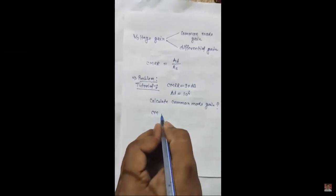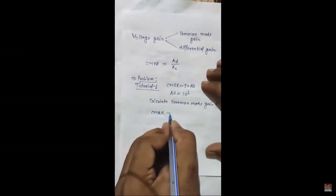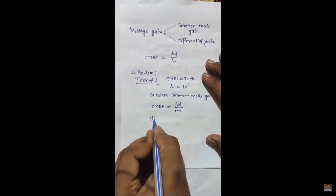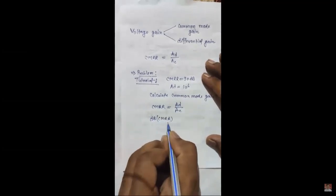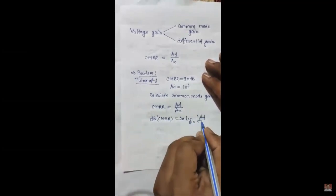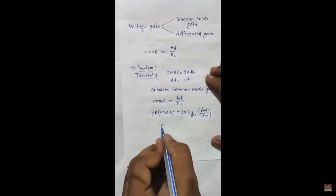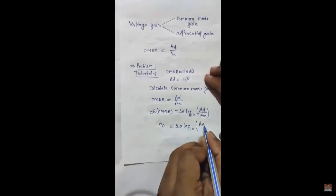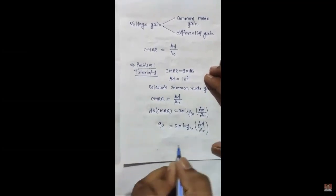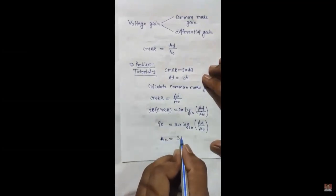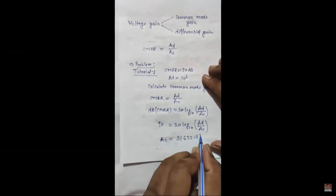For solving this tutorial problem, we have to use the equation of CMRR which is AD upon AC. If the CMRR is calculated in decibels, then it is 20 log of AD upon AC. Substituting the values: 90 equals 20 log of AD by AC. After solving this equation, we get the common mode gain as 31622.77.